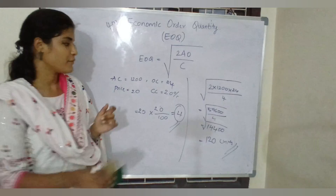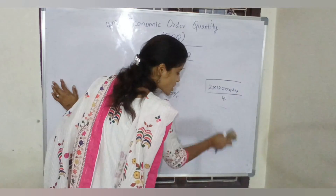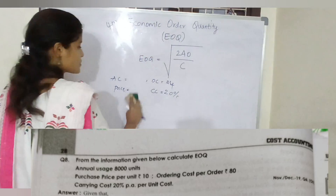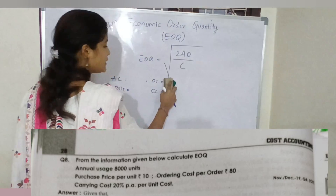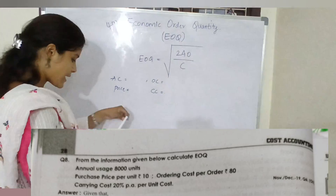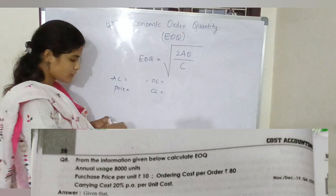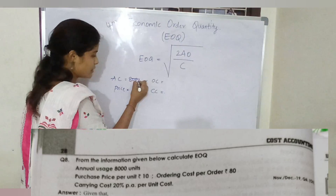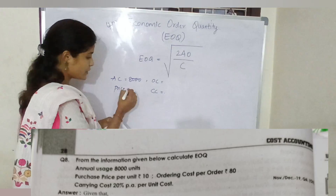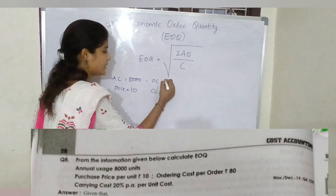Now let's look at the second question, which you can see on the screen. All the data related to the formula will be given in the question. In the second question: annual consumption is 8,000 units, purchase price per unit is 10 rupees, carrying cost is 20%, and ordering cost is 80.